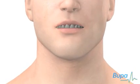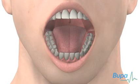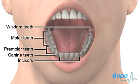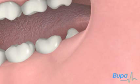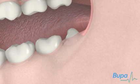Here we show the position of the wisdom teeth. Wisdom teeth are located at the back of your mouth and develop after all the other teeth. Wisdom teeth don't usually cause problems. However, if there isn't enough space for them to come through, they become impacted.